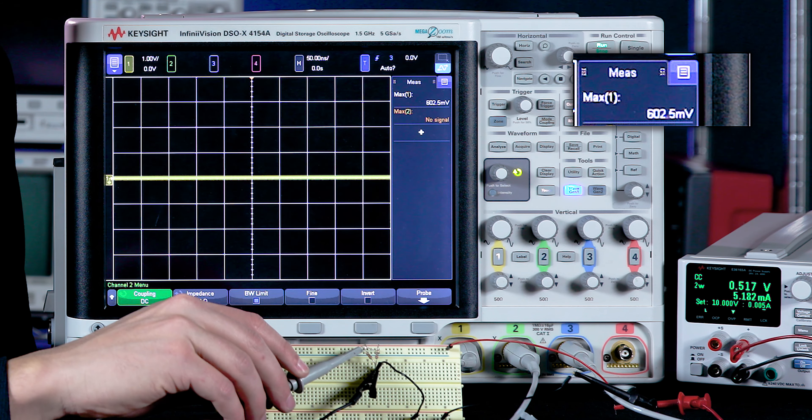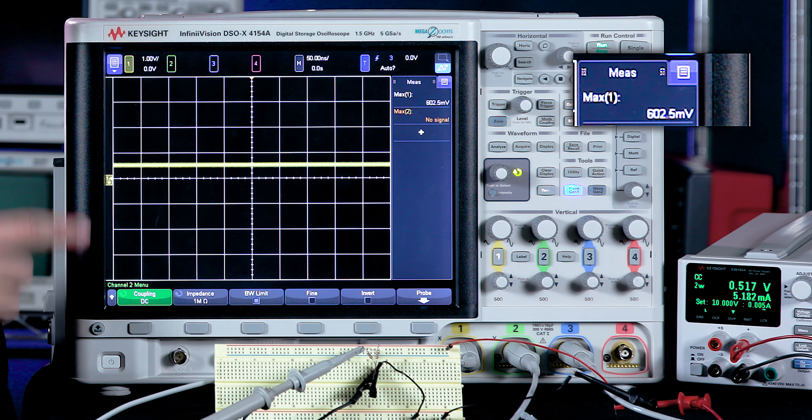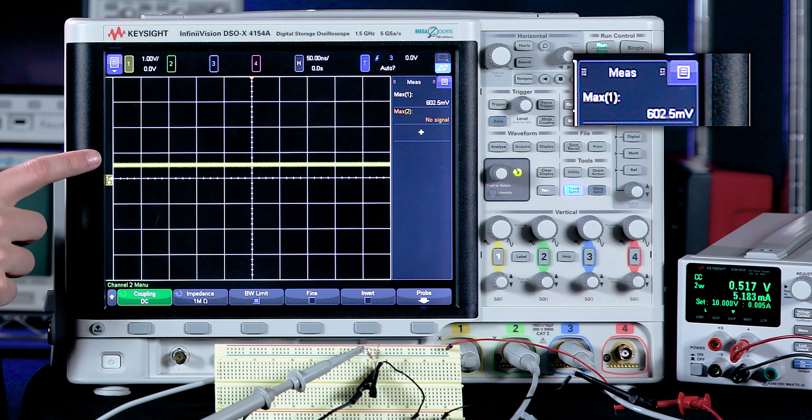So if I hook up my channel one to these resistors in parallel, you can see that the power supply only has to supply half a volt instead of one volt to get the same current through them. So having resistors in parallel equivalently halves the resistance, assuming your resistors are the same ohm value.